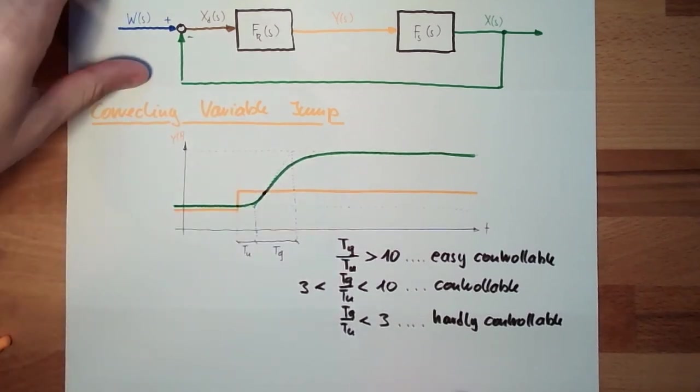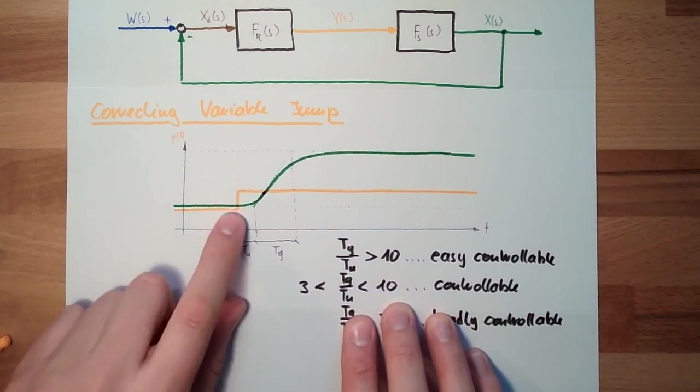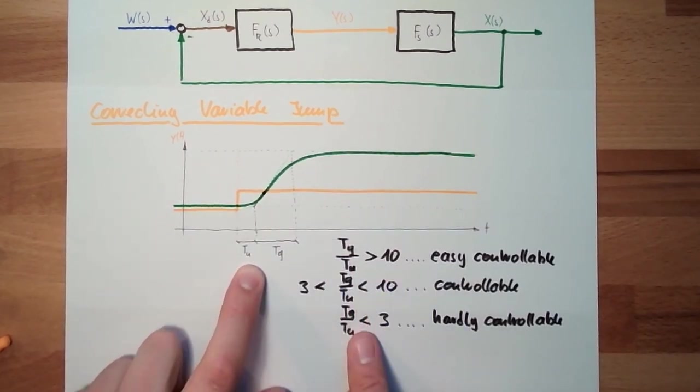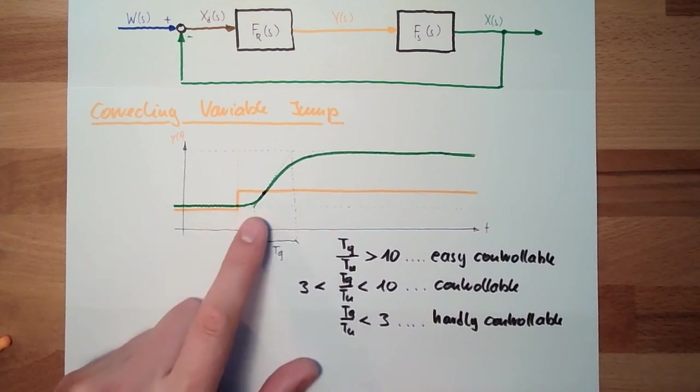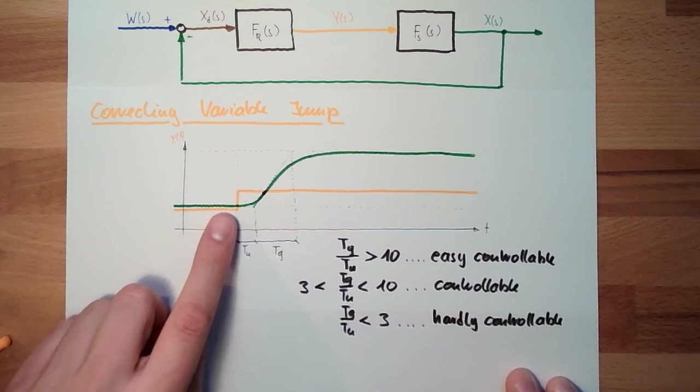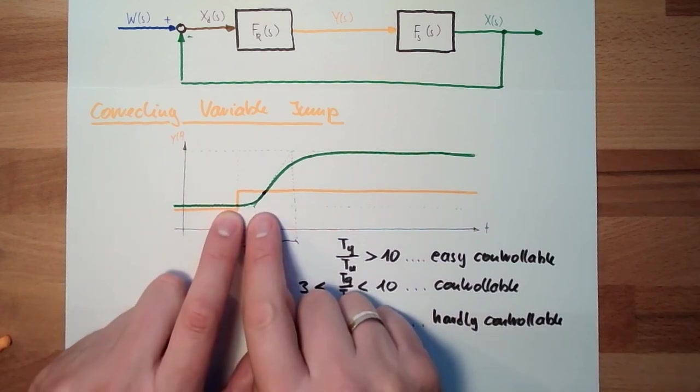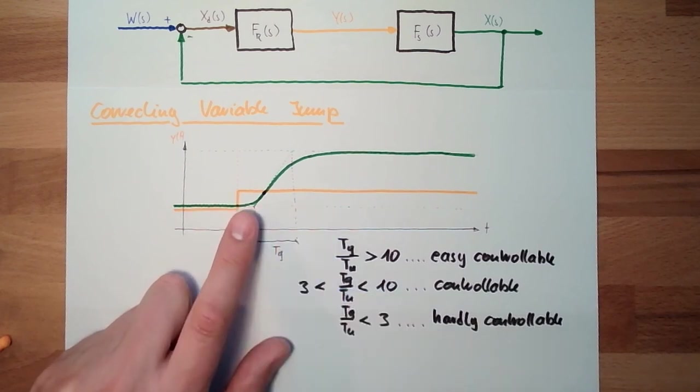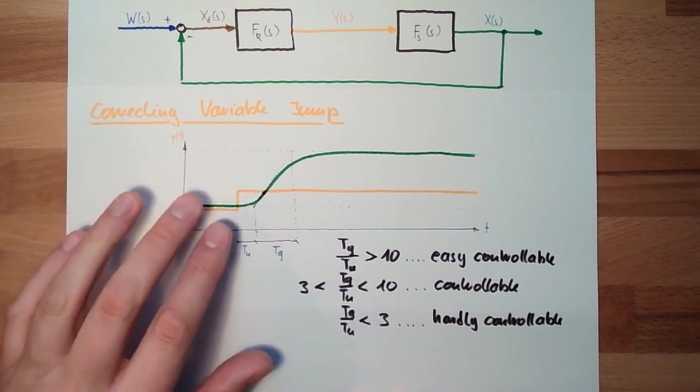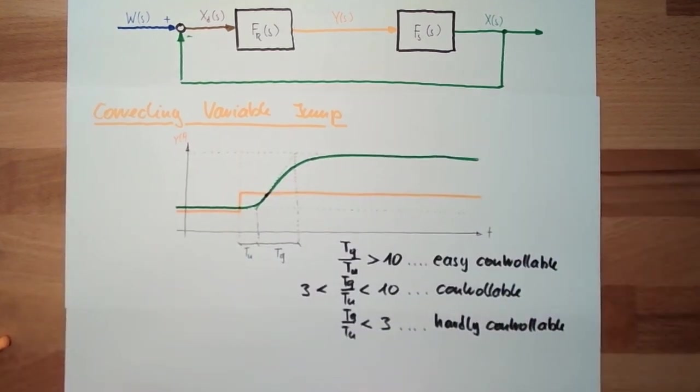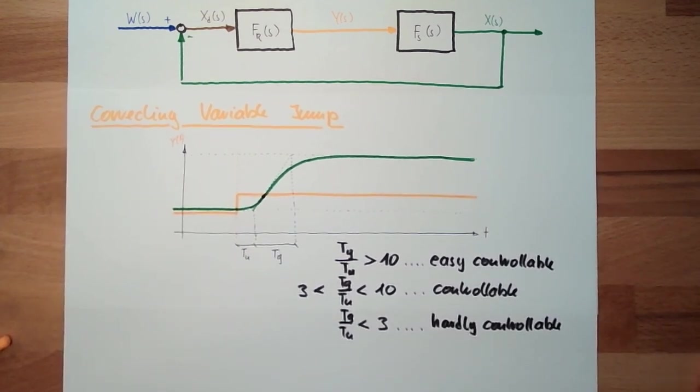With a correcting variable jump, these are the things we can read out of it. This delay time, the rise time - if the rise time is 10 times bigger than the delay time, we're fine, because then we can still react. It delays a little bit but then it acts gently. Then there's an area where it is controllable. And then if this is really quite long compared to this, it's already getting hard, because we do something with our controller and we don't really see the result. And then if we see the result, we're almost there already. This is why it's hard to control.